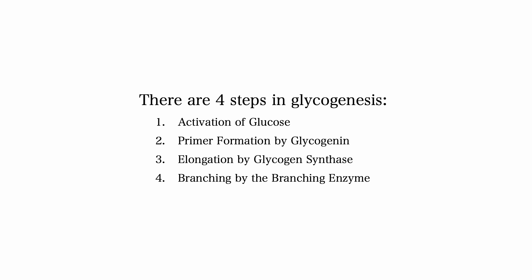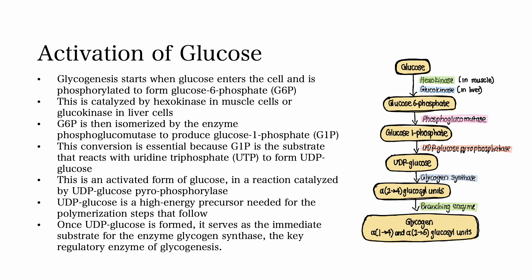Step 1: Activation of glucose. Glycogenesis starts when glucose enters the cell and is phosphorylated to form glucose-6-phosphate, also called G6P. This phosphorylation is catalyzed by hexokinase in muscle cells or glucokinase in liver cells. Phosphorylation helps retain glucose within the cell by preventing it from diffusing back out. G6P is then isomerized by the enzyme phosphoglucomutase to produce glucose-1-phosphate, also called G1P.